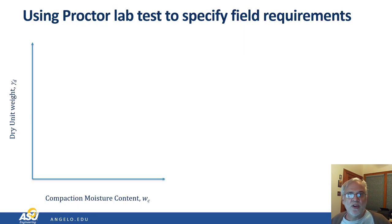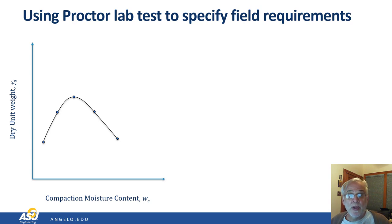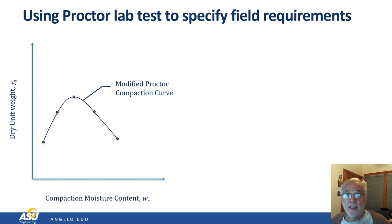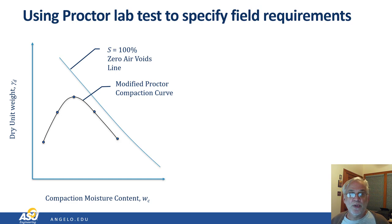First, let's review the Proctor Compaction Test. When we've completed a compaction test, we'll have generated a plot of the dry unit weight as a function of compaction moisture content. A typical plot will have the shape shown here, with dry density starting low at a low moisture content, increasing as the moisture content increases to a peak value, and then decreasing again with increased moisture content. We'll assume this particular curve came from a test following the modified Proctor procedures, that is ASTM standard D1557. The compaction curve cannot cross the line of 100% saturation or the zero air voids line. This is a theoretical maximum value of compaction which can be achieved, and we'll never get there. The tail of the compaction curve at high water content will be roughly parallel to the zero air voids line.